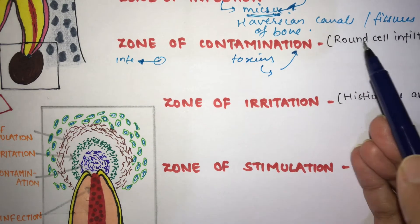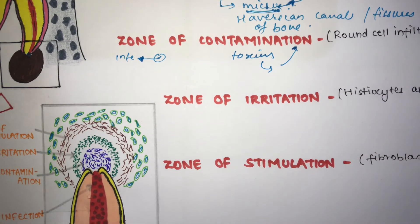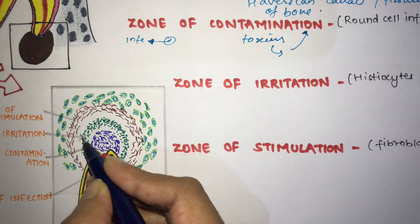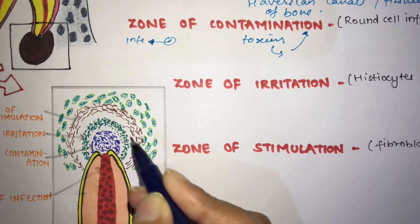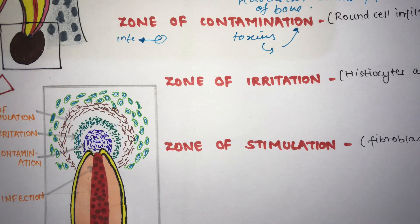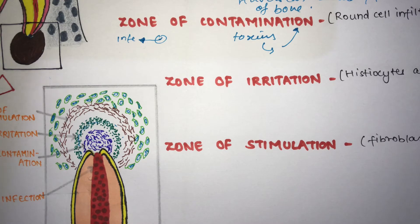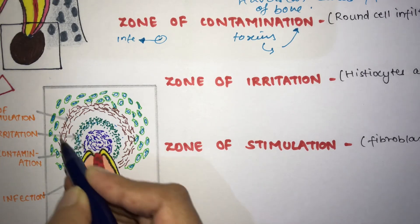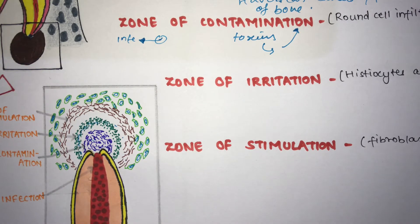The Zone of Irritation is the third zone, characterized by macrophages, osteoclasts, and histiocytes. Fish found evidence of irritation further from the central lesion as the toxins become more diluted. In this area, small round cells and normal bone cells are present, and osteoclasts could just about survive. As the toxins are getting diluted, some cells survive in this zone.